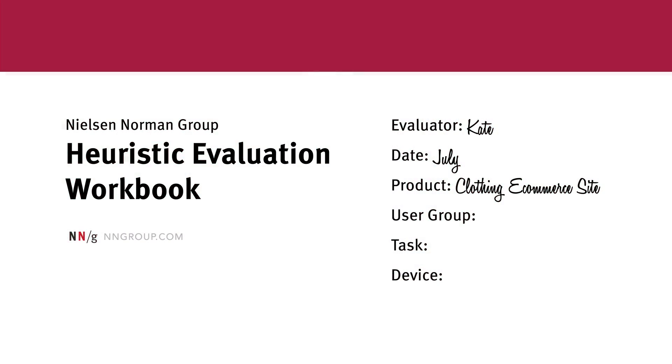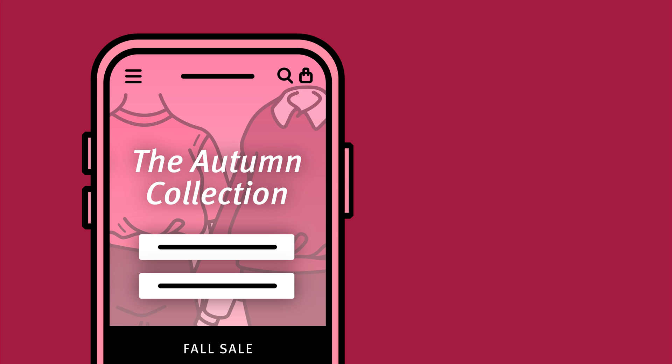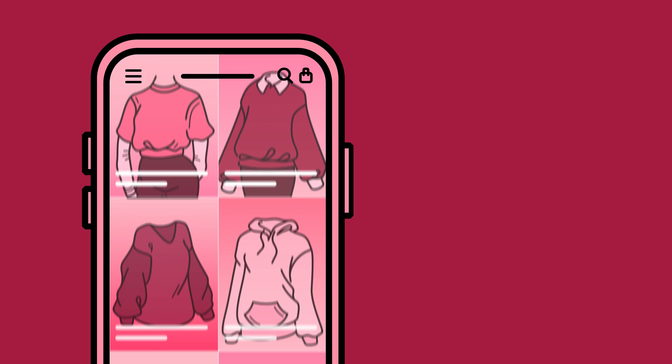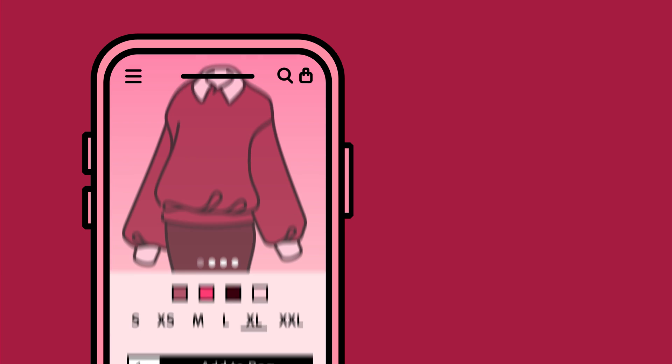If I'm evaluating this design, here's how I might label my workbook. I'm assessing the mobile site, and I'm considering shoppers who are trying to complete the task of buying a shirt. So first, I'm going to walk through the process of finding a shirt to buy as if I'm shopping on the site. Once you feel comfortable with the product, go back through the task a second time. In the second pass, look for design elements, features, or decisions that violate one of the 10 heuristics.